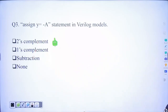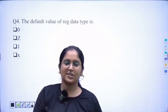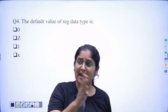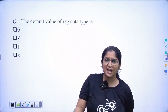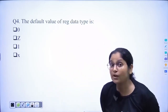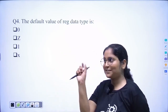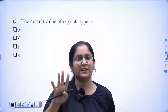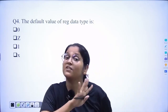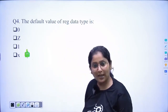Now coming to the next part — the default value of the reg data type. We studied this in our first lecture on registers and nets. Suppose you are writing a program and you declared a variable as reg but have not given it any value — what will be stored in that register? That would be don't care (x).